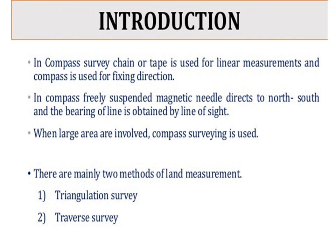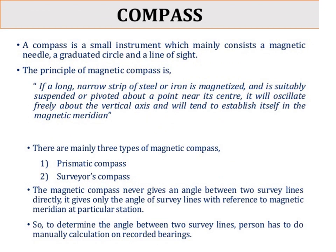Basically there are two methods of land measurement: one is triangulation survey and another is traversal. In this slide we will see the compass. A compass is a small instrument which mainly consists of a magnetic needle, a graduated circle, and a line of sight. We will now see the principle of magnetic compass.